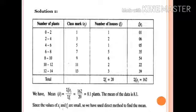Number of houses, that is our frequency, is given as 1, 2, 1, 5, 6, 2, 3. Now we multiply fi into xi. So 1 into 1 equals 1, 3 into 2 equals 6, 5 into 1 equals 5, 7 into 5 equals 35, 9 into 6 equals 54, 11 into 2 equals 22, 13 into 3 equals 39. Sum of fi equals 20. Sum of fi xi equals 162. Direct method formula: x bar equals sigma fi xi upon sigma fi. So 162 upon 20 equals 8.1 plants. Since the values are small, we have used direct method to find mean.